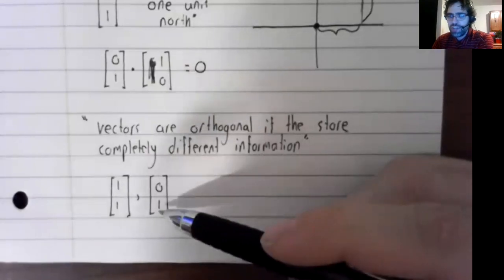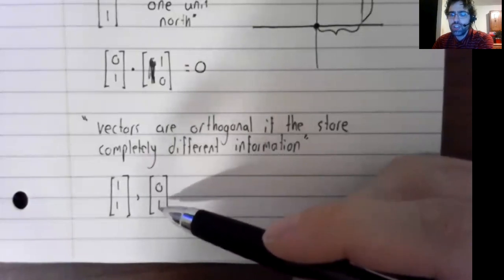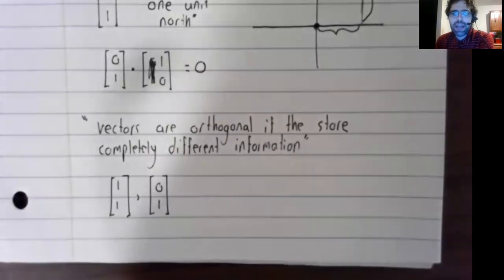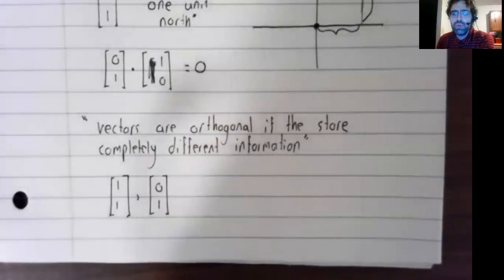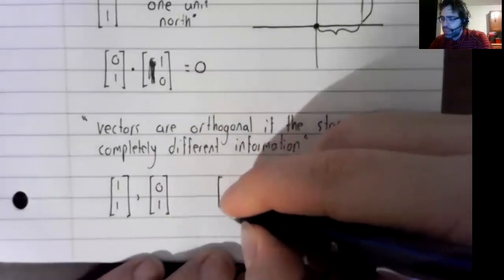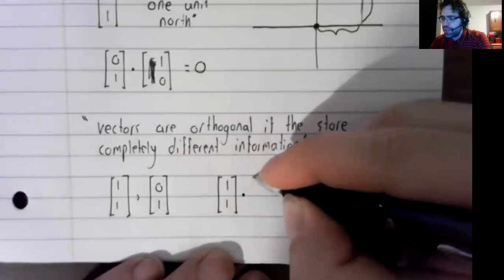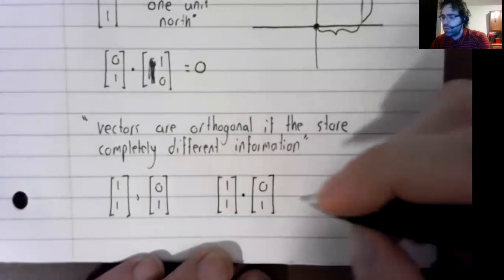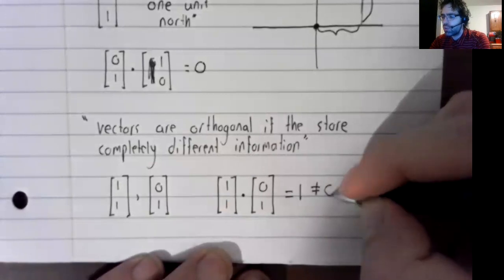This vector stores the information one unit north. So the information overlaps. Both of these vectors are talking about northern movement. And because the information that they give you overlaps, they are not orthogonal.